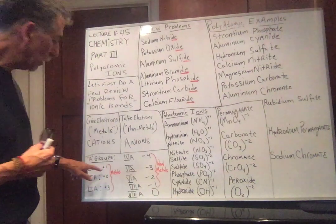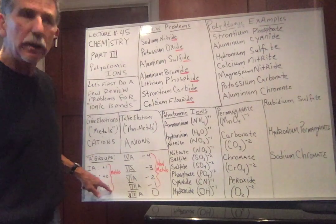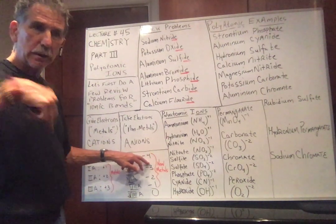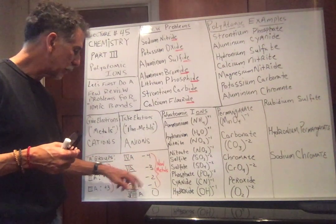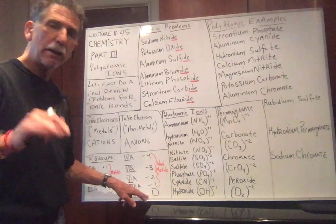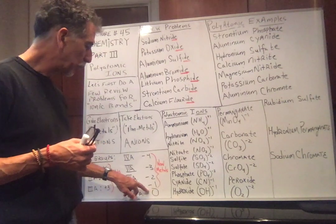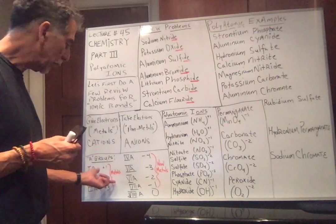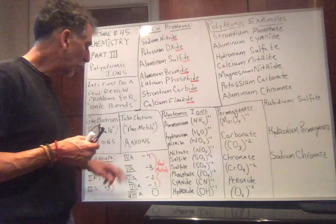Group 1A wants to give one electron, so it wants to be plus 1. 2A, plus 2. 3A, plus 3. Then we skip to 4A, which wants to take four electrons. 5A needs three electrons. 6A, 7A is minus 1 — the halogens. Group 8A, the noble gases, do not need anything and do not interact. So metals are givers, nonmetals are takers.